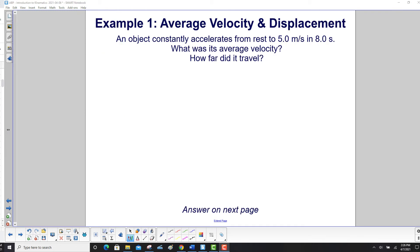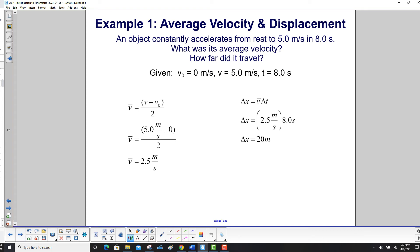An object constantly accelerates from rest to five meters per second in eight seconds. What was its average velocity? How far did it travel? As always, we list our givens. And again, rest means your initial velocity is zero. And then here's our final velocity. Here's our time.